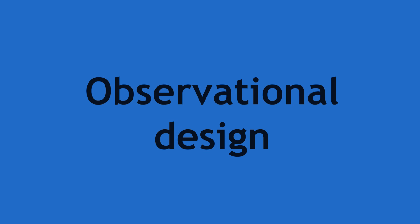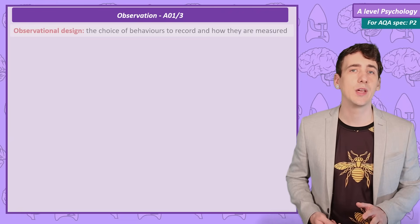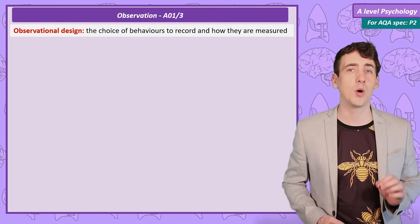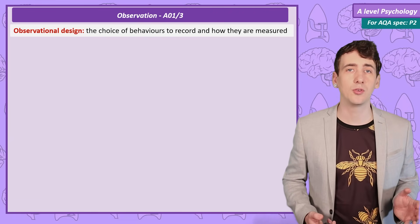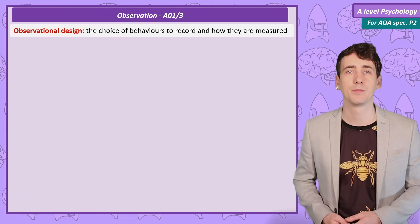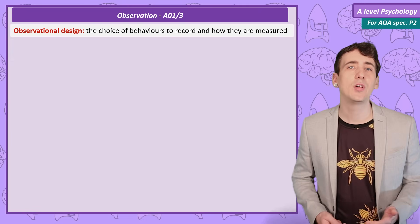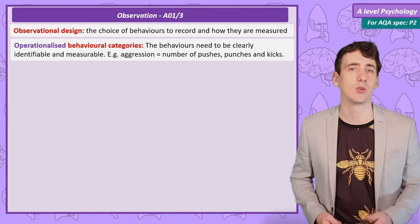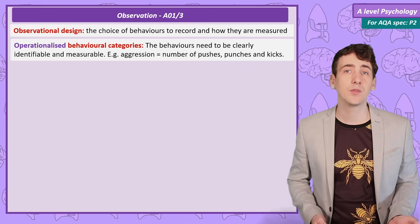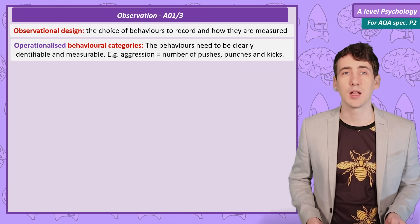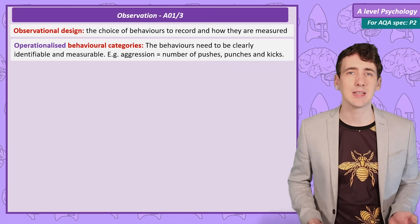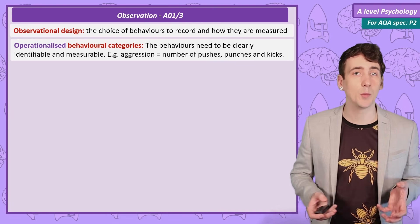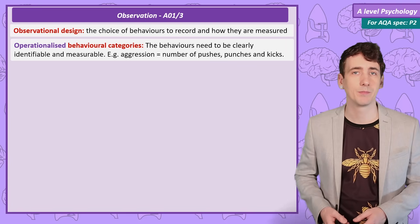Observational Design. When designing our observation, we need to consider exactly what behaviour we are looking for and how we are going to record it. First, let's talk about operationalised behavioural categories. When something is operationalised, it means we are clearly defining a variable so that we can objectively measure it.